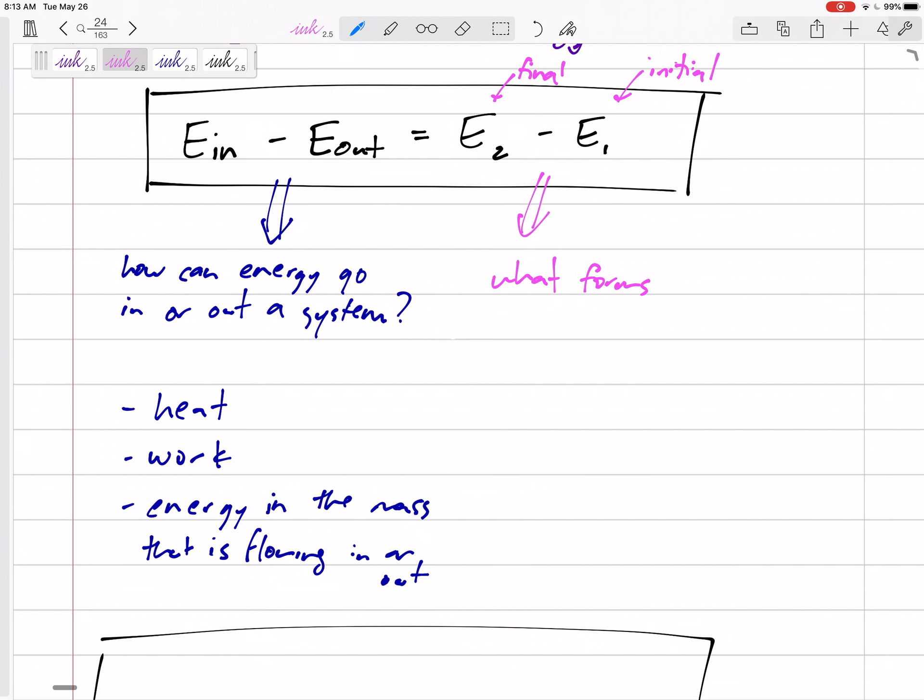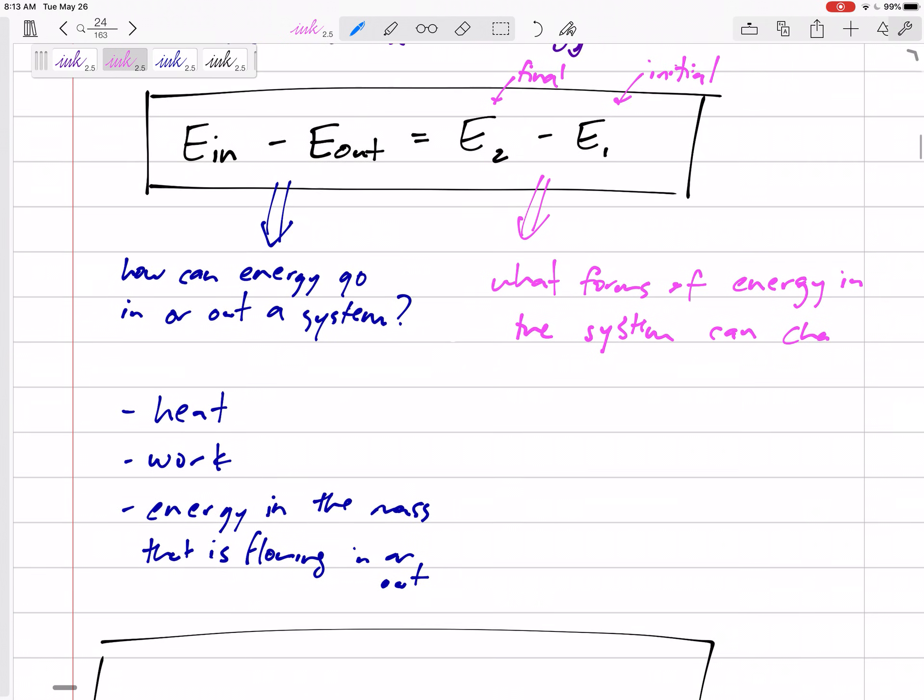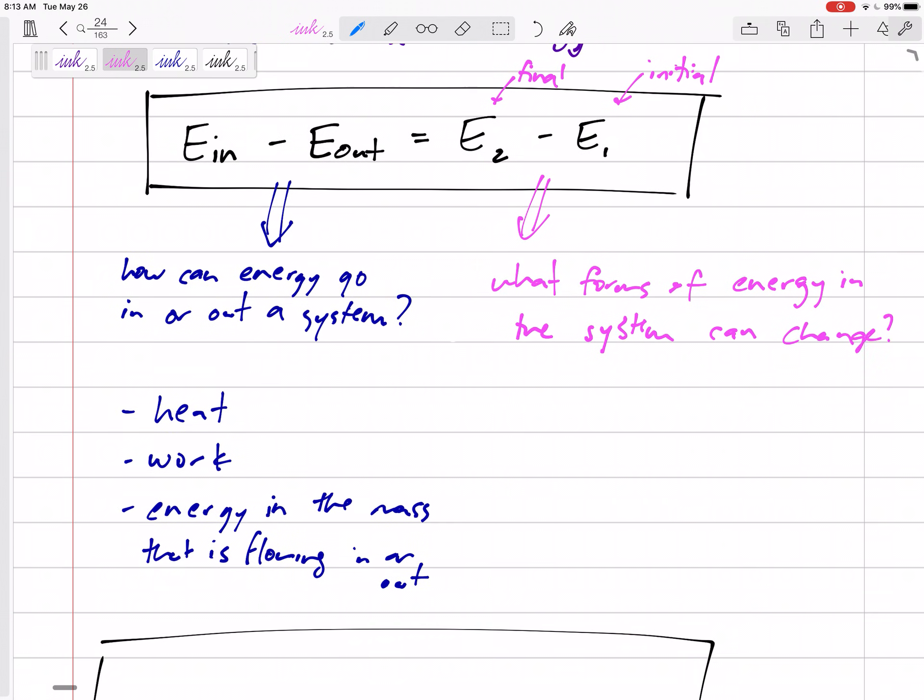The right hand side of our equation, let's think about what forms of energy in the system can change. Well, maybe the kinetic energy. Initially it's at one kinetic energy, one velocity. Finally it's at a different velocity. Potential energy.